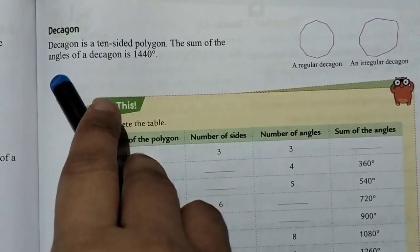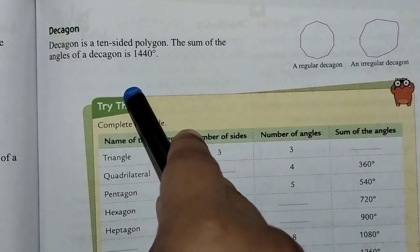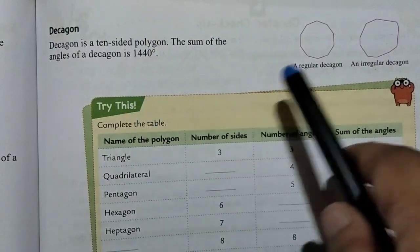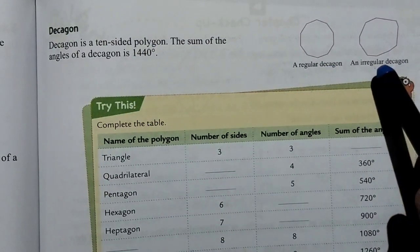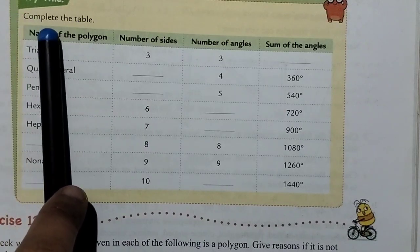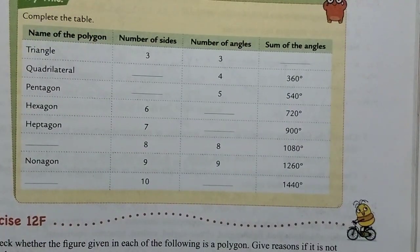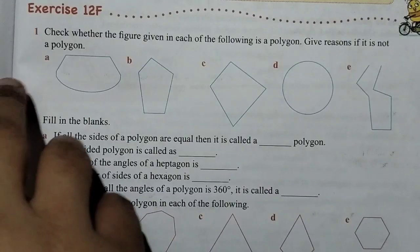Next is the decagon. This is 10-sided polygon and the sum is 1440 degrees. This is the regular decagon and this is the irregular. So next, complete the table, do it yourself, read all the definitions in the book. Let's do exercise.